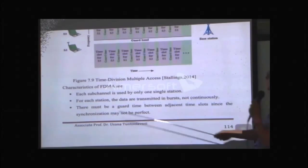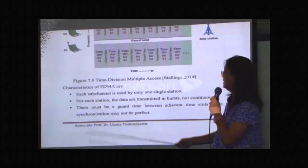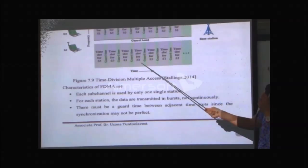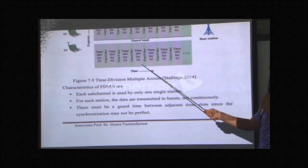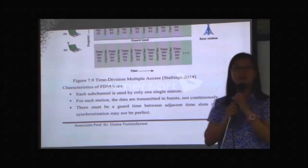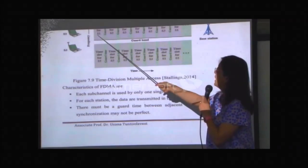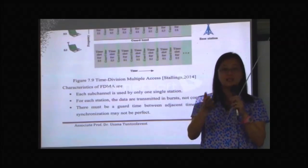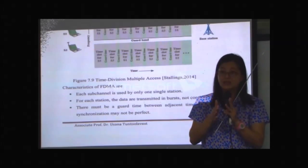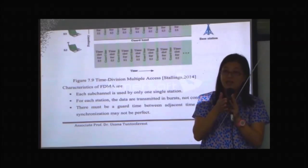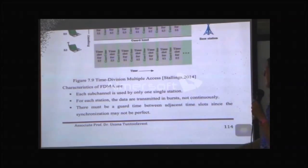Characteristics of TDMA: each slot is used by only one single station, so if user two is not sending, that slot is wasted and capacity is lost. Also, for each station, data are transmitted in bursts and not continuously — you send for your short time slot, then wait for all other users to take their turns before you can send again. This is like speaking for one minute, waiting twenty minutes, then speaking again. This ends Chapter 7.